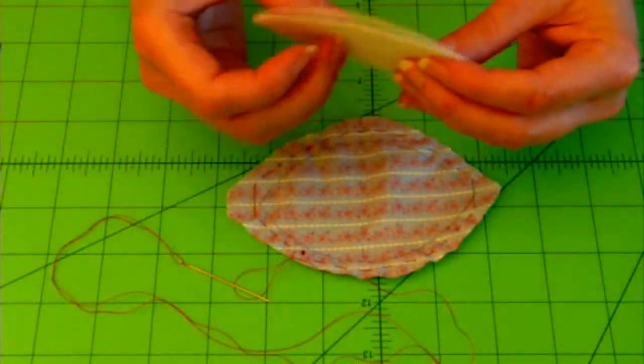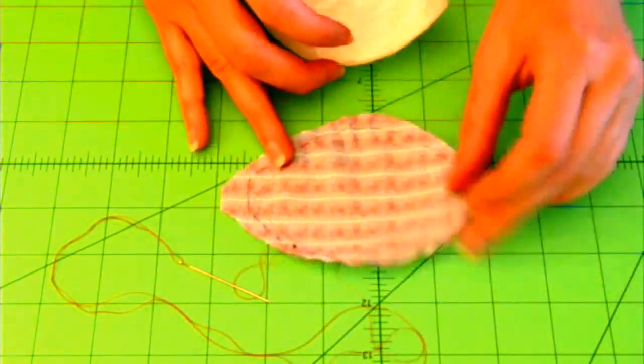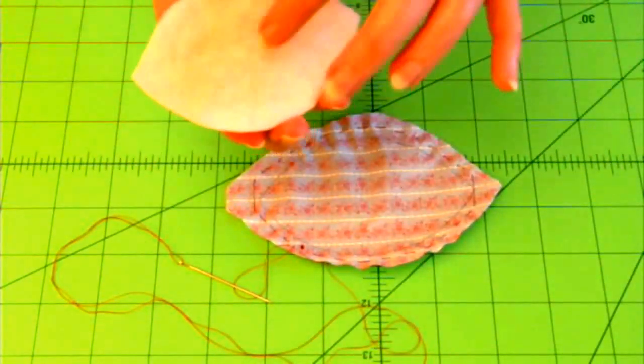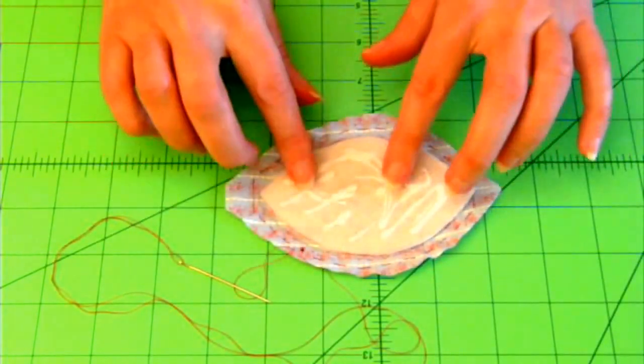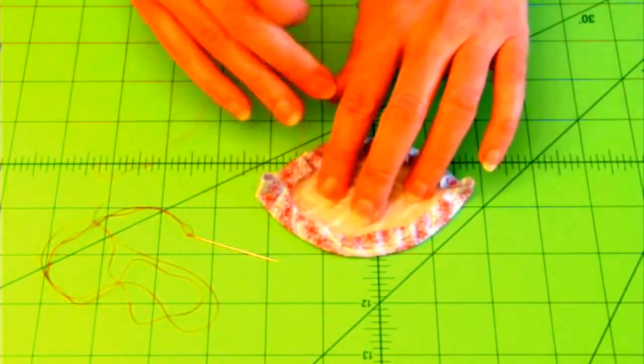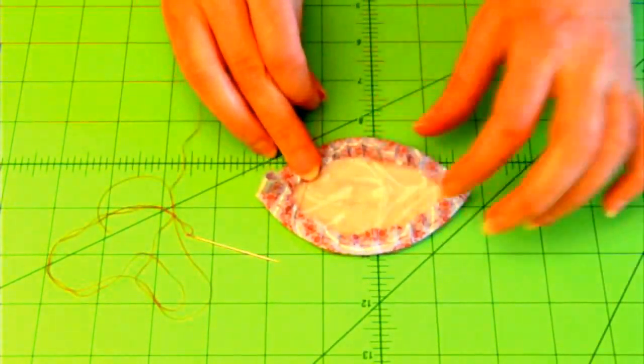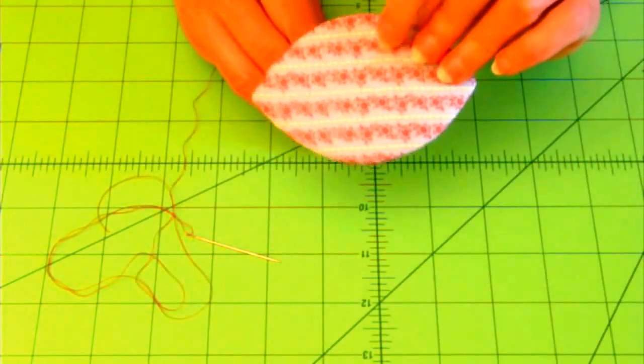And here is the template piece with the batting glued to it. So I have my fabric with the right side facing downward, and I'm going to place the batting side of this template against the fabric. Now I'm going to take the end of my thread and I'm going to pull it. And look at how nicely that gathers the fabric up around the template.